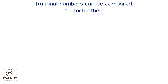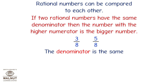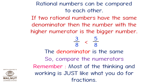Comparing rational numbers. Rational numbers can be compared to each other. If 2 rational numbers have the same denominator, then the number with the higher numerator is the bigger number. For example, 3 upon 8 and 5 upon 8 — the denominator is the same, so compare the numerators. So 3 upon 8 is smaller than 5 upon 8. Remember, most of the thinking and working is just like what you do for fractions.